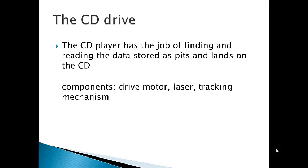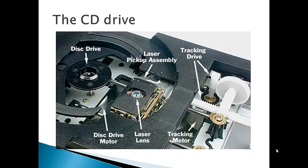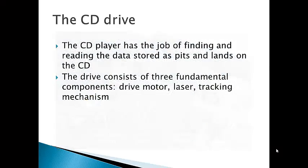The drive consists of three fundamental components: a drive motor that spins the disc and is precisely controlled to rotate between 200 and 500 rotations per minute depending on which track is being read, a laser and lens system to read the bumps, and finally a tracking mechanism that moves the laser assembly so that the laser beam can follow the spiral track of the bumps.